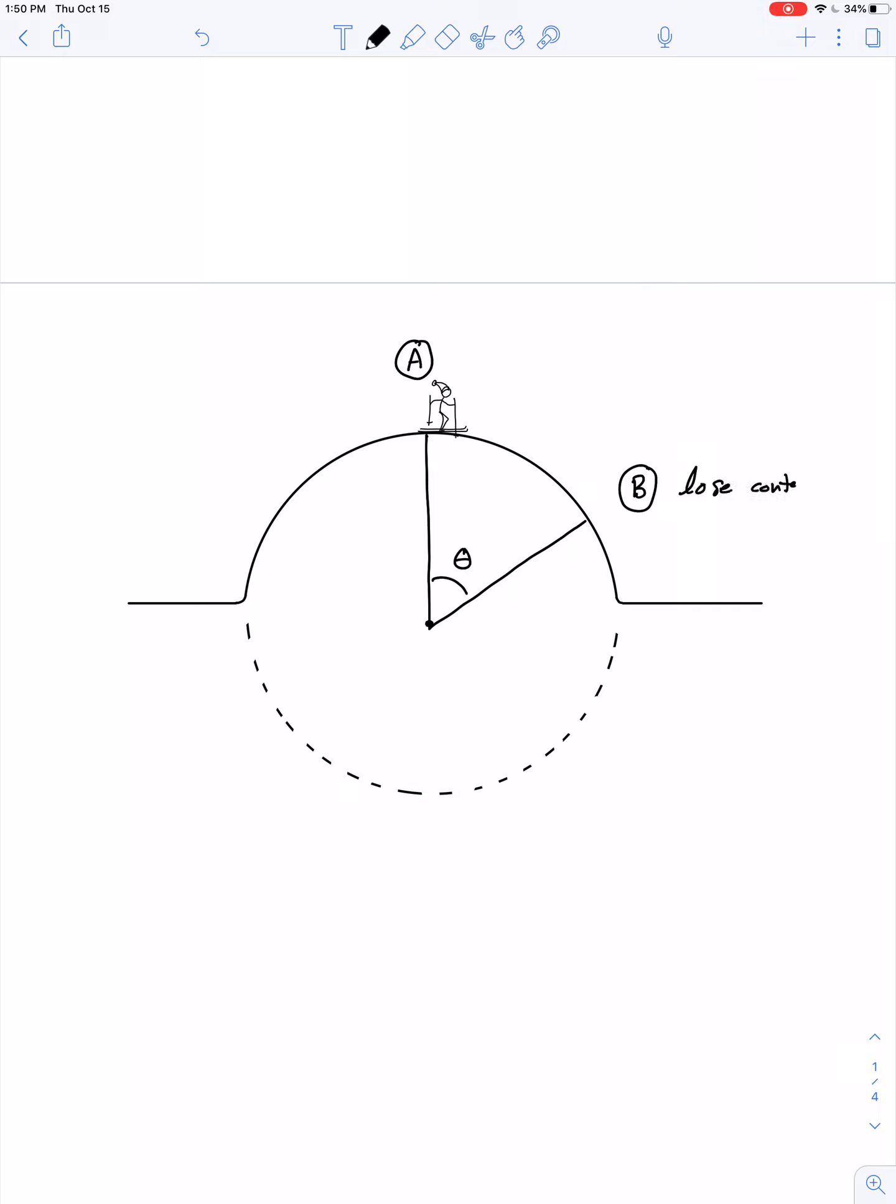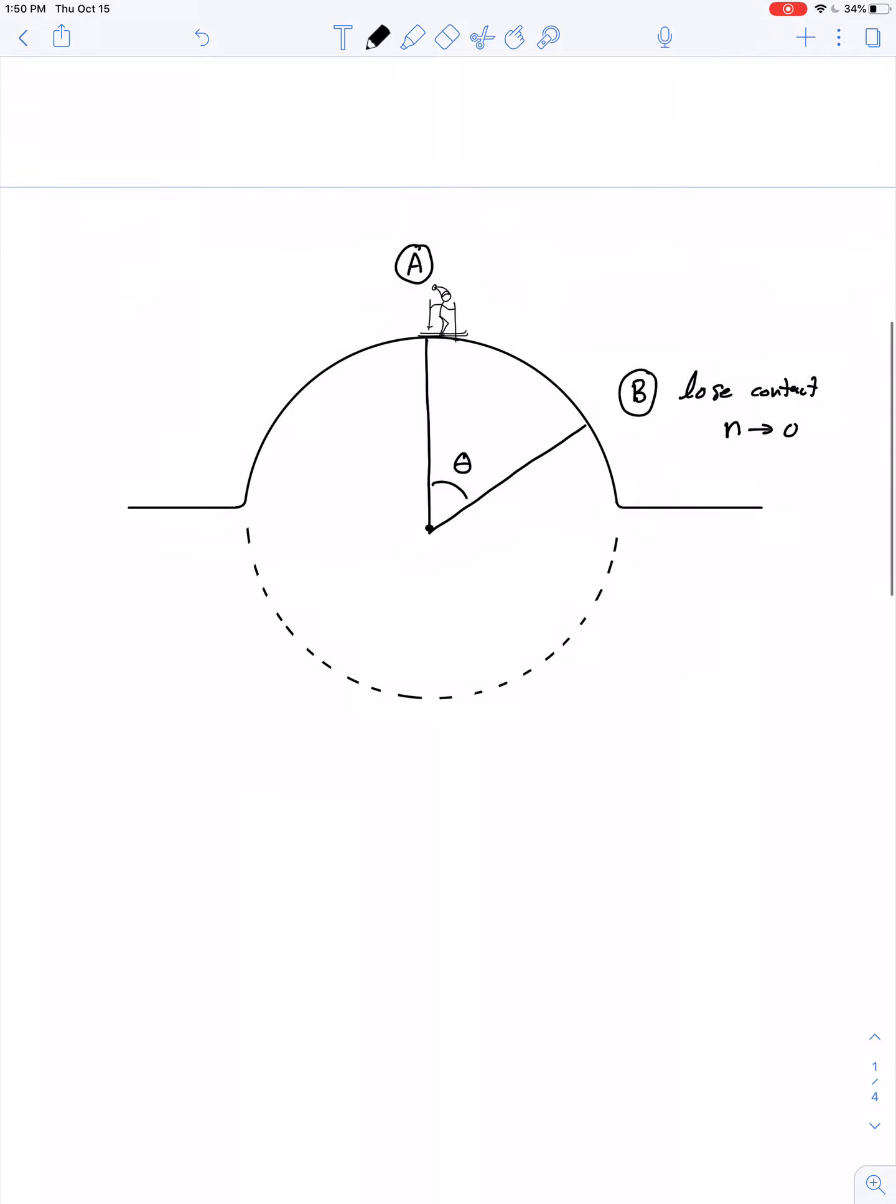Lose contact. What does that mean? That means the normal force approaches zero. So, the energy at point A has to equal the energy at point B.